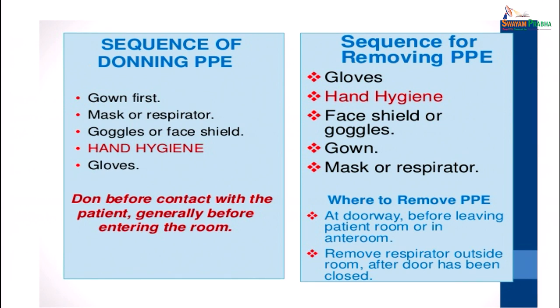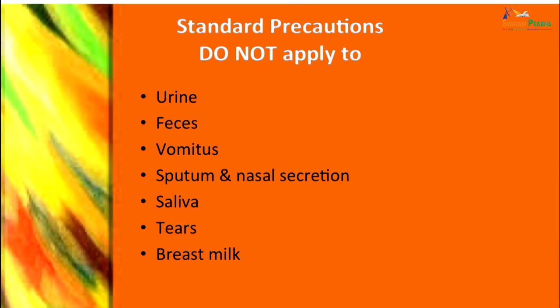PPE is removed at the doorway before leaving the patient room or ante room, and the respirator is removed outside the room after the door has been closed. Standard precautions do not apply to specimens like urine, feces, vomitus, sputum, saliva, tears or breast milk — they apply mainly to blood and blood-stained fluids.